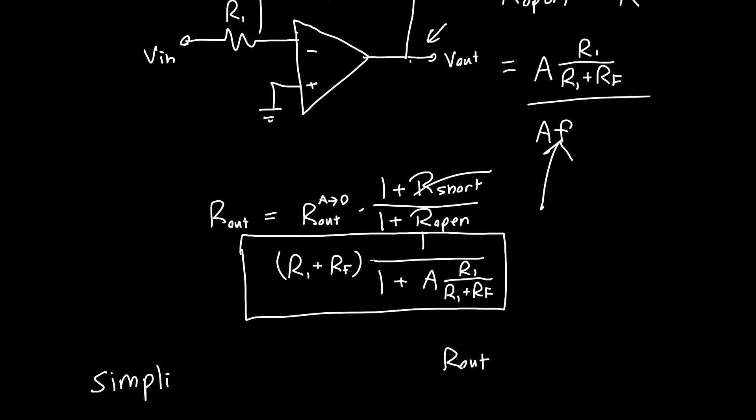And that's the general advantage of Blackman's theorem in return ratio analysis. It simplifies one complex problem into many small problems, many small easy problems, which are much more tractable to do. And often you can just look at the circuit and say, yeah, this is the answer. So I hope you enjoyed the video. If you have any questions or comments, please feel free to post them down below and I'll see you next time. Thanks for watching.